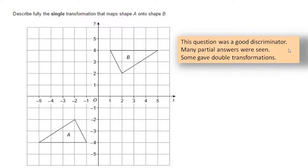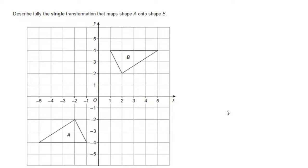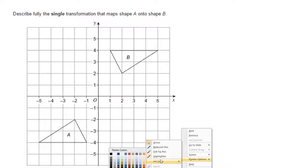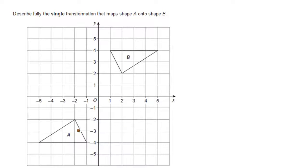The examiner says this question was a good discriminator — many partial answers were seen, and some people didn't give a single transformation, they gave double transformations which wouldn't have got them marks. So first of all let's label the shape up. I'm labeling it PQR. The reason I'm doing this is so I can tell you exactly why I'm eliminating something. So PQR would map onto the image here.